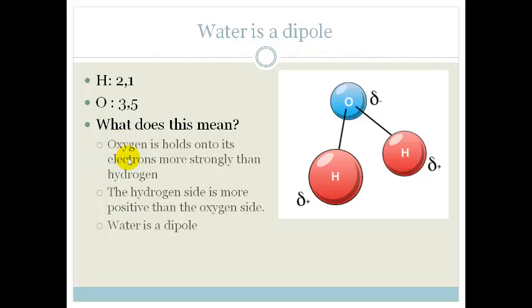That means that oxygen holds onto its electrons more strongly than the hydrogens. That means that the electrons in your molecule are going to spend more time around the oxygen atom than around the hydrogen.